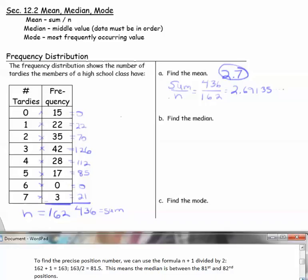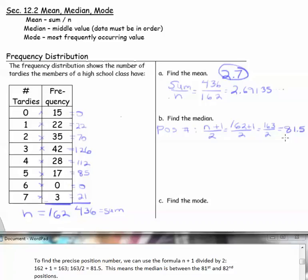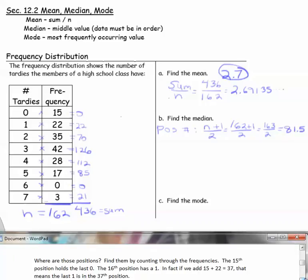To find the precise position number, we can use a formula. The position number for the median is n plus 1 divided by 2. So our n is 162, plus 1 would be 163, and then divided by 2 gives us 81.5. This means the median is between the 81st and 82nd positions.